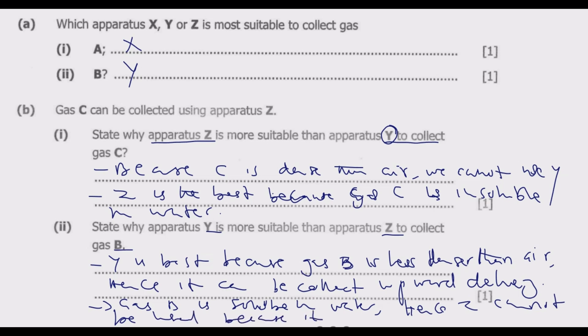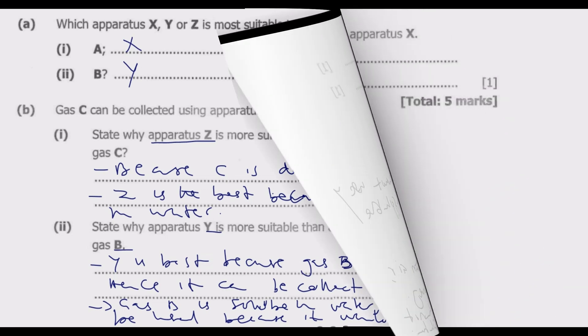Also, gas B is soluble in water, and hence apparatus Z cannot be used because it would instead form a solution in water. These are the reasons. Question C says: suggest the name of a gas that would be collected using apparatus X.